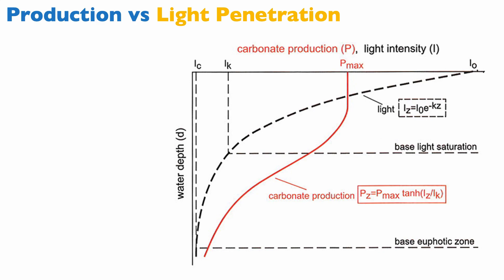So here's a theoretical graph that shows on the horizontal axis light intensity and carbonate production. Light intensity is the dashed black line, and the red line is carbonate production. The vertical axis is depth. Notice that all of these do not have scale. It's a conceptual diagram. We'll talk in a minute why this is a conceptual diagram at this point.